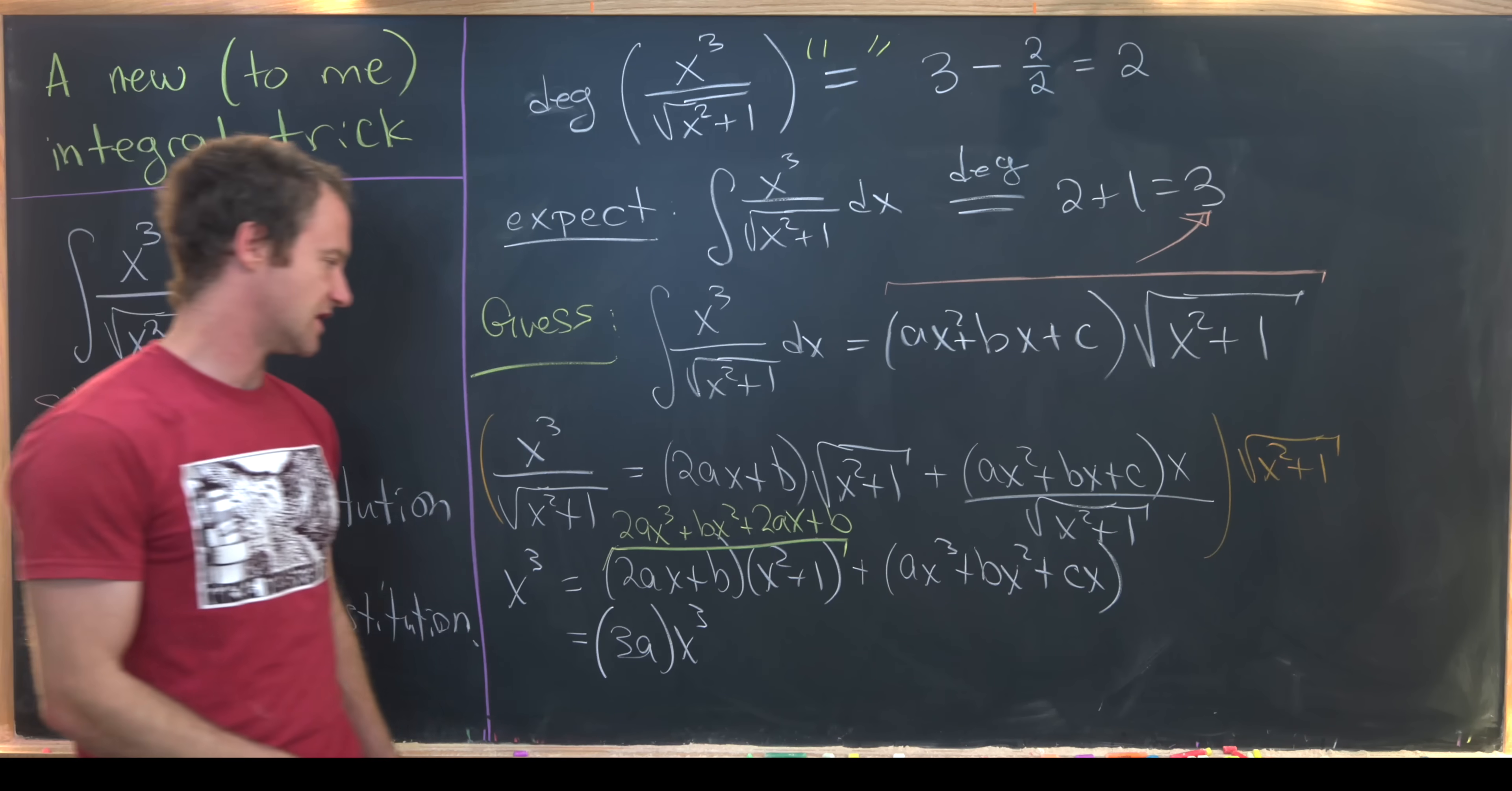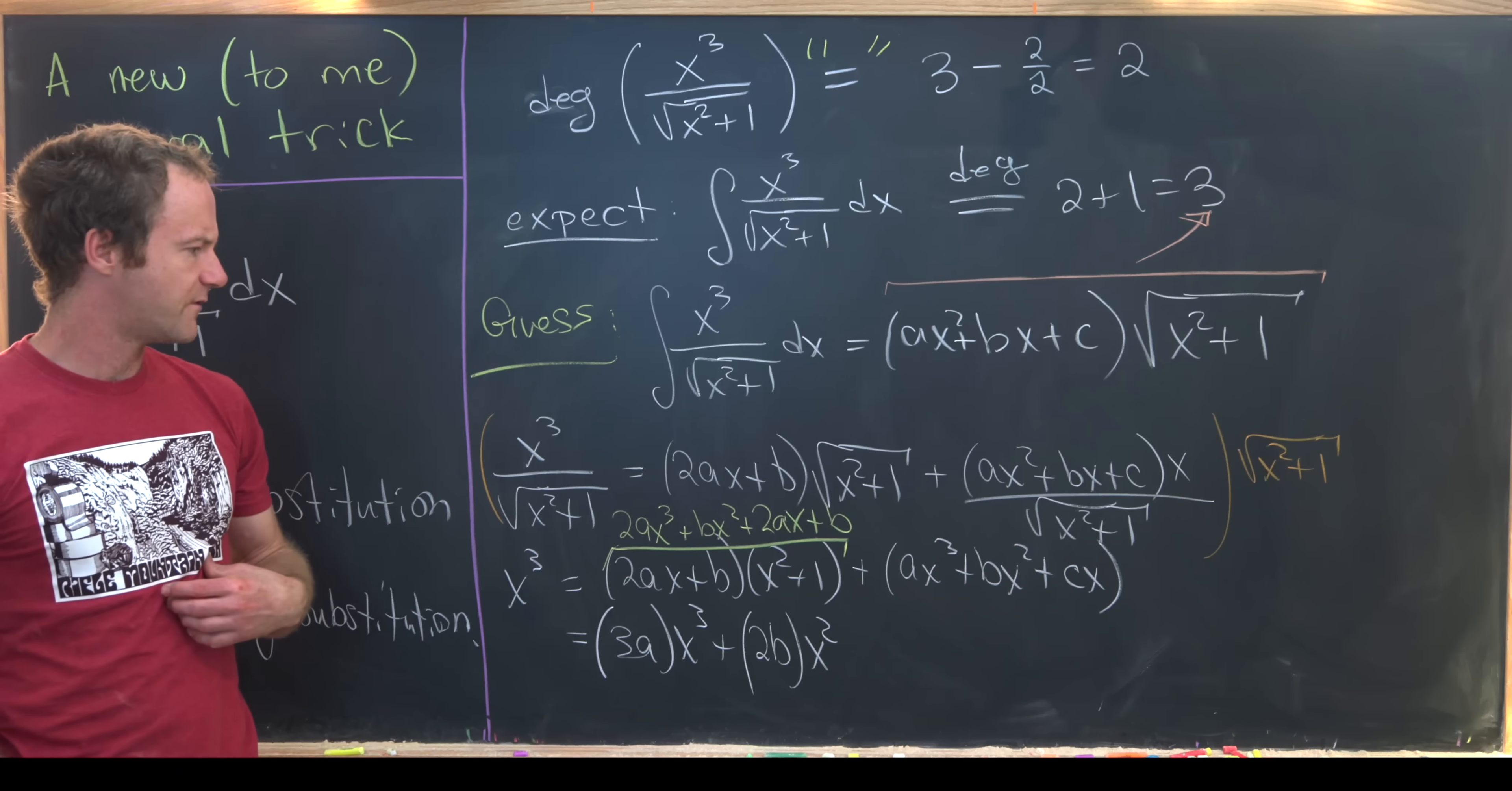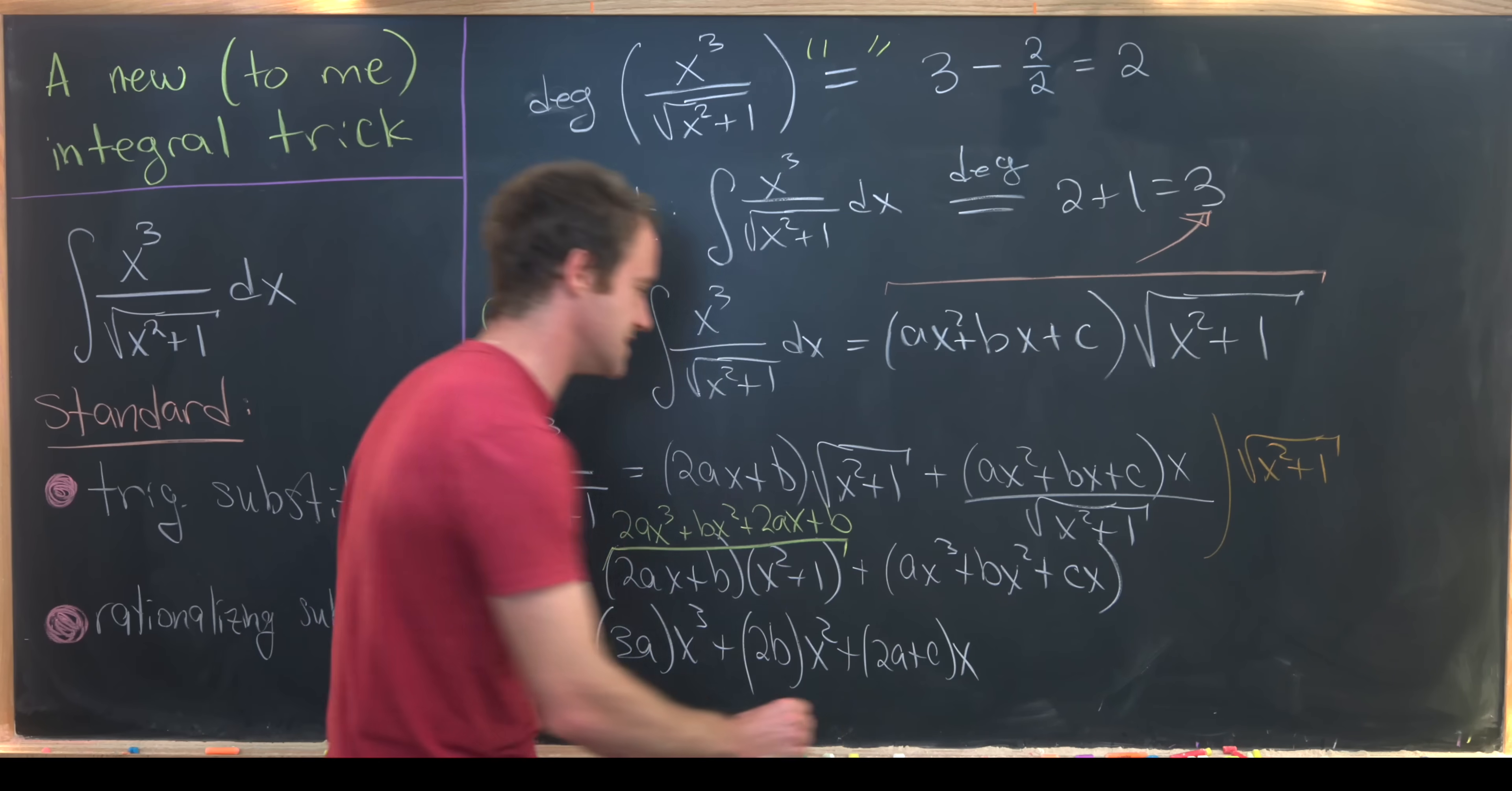Now let's look at the coefficient of x squared. So the coefficient of x squared will be bx squared plus another bx squared. So that'll be 2bx squared. What's the coefficient of x? The coefficient of x is 2ax here plus cx there. So that's going to be plus 2a plus c times x. Then finally the constant term is just b.